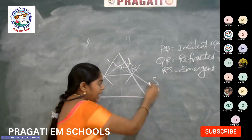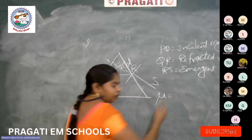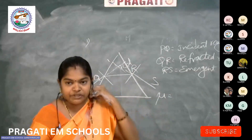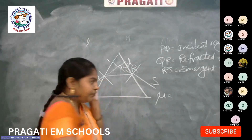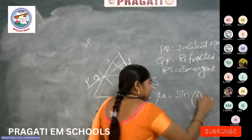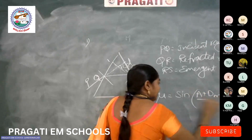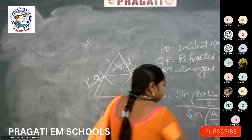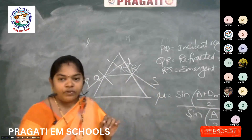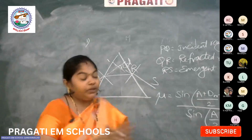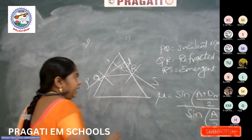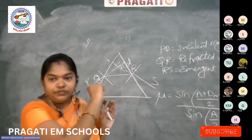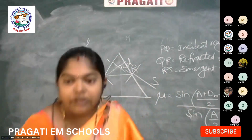After drawing the prism diagram, write the formula: mu = sin((A + Dm)/2) / sin(A/2), by which we calculate the refractive index of the prism. Better draw the diagram in the middle of the page and label the parts to one side — it will be easy for the examiner to correct.